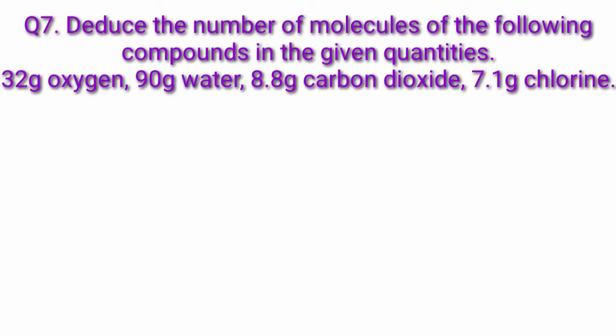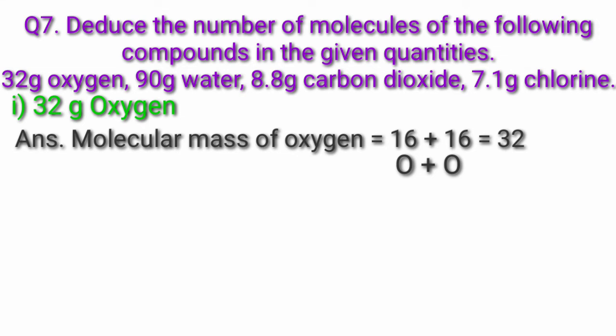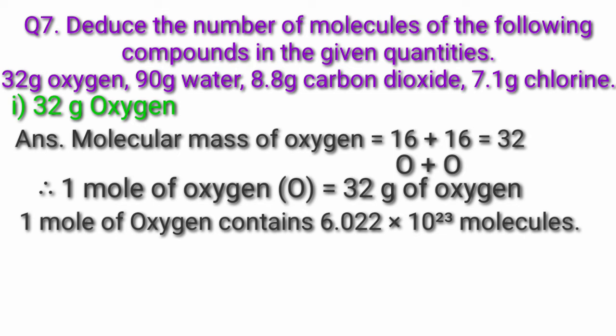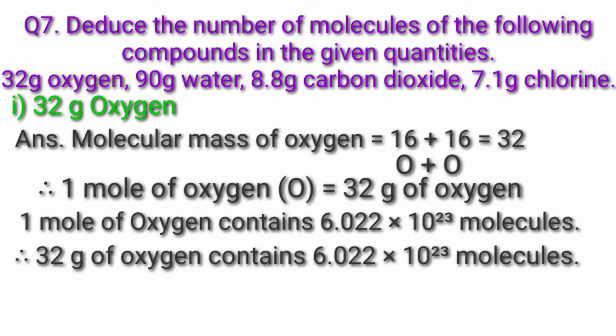Question 7. Deduce the number of molecules of the following compounds in the given quantities: 32g oxygen, 90g water, 8.8g carbon dioxide, 7.1g chlorine. Answer — 32g oxygen: molecular mass of oxygen = O + O = 16 + 16 = 32. Therefore 1 mol of oxygen = 32g of oxygen. 1 mol of oxygen contains 6.022×10²³ molecules. Therefore 32g of oxygen contains 6.022×10²³ molecules.